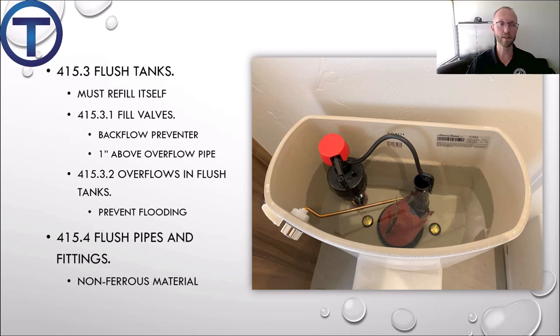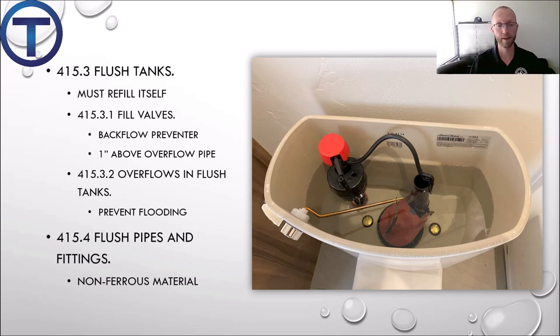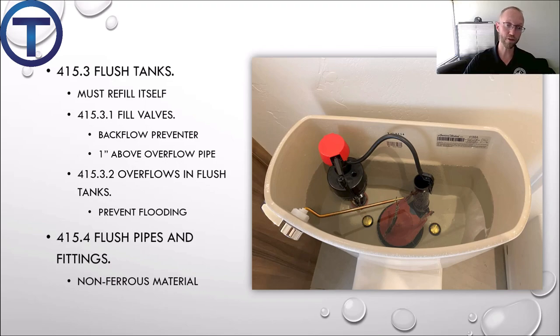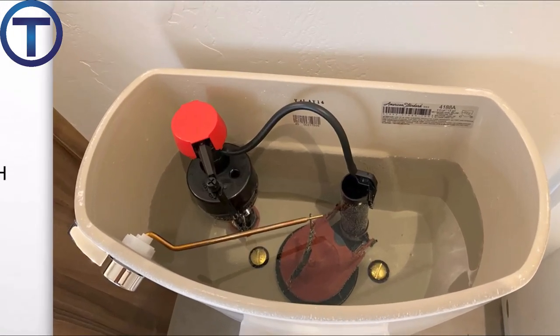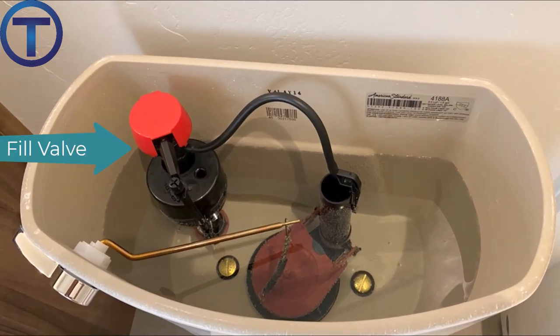4.15.3 talks about flush tanks and gives the requirement that the tank has to be able to automatically refill itself after each flush — we have the fill valve to take care of that. 4.15.3.1 gives more definition on the fill valve: first, it has to have a backflow preventer. The fill valves stick up out of the water with little air holes, so backflow prevention is built in. We wouldn't want water from the tank getting back into our potable water supply if there was a negative pressure and a siphon started.